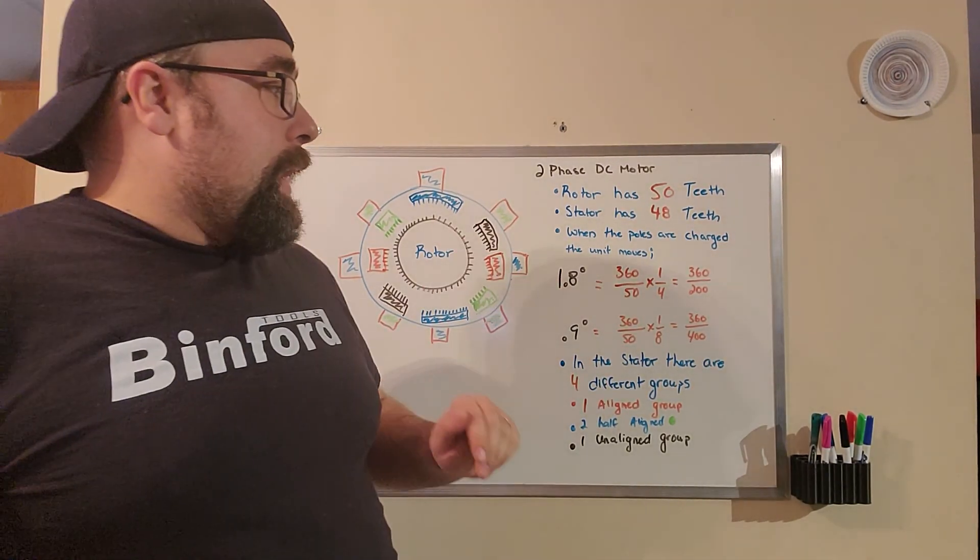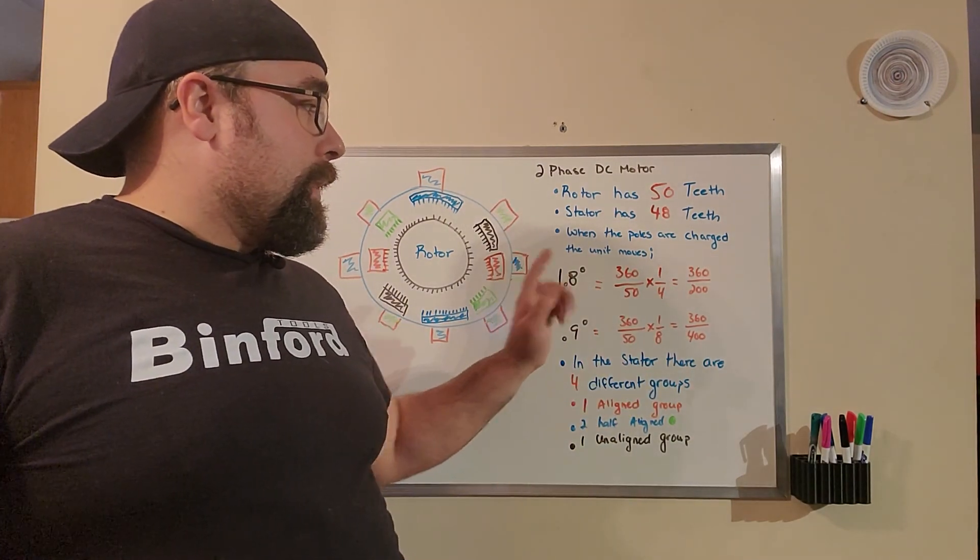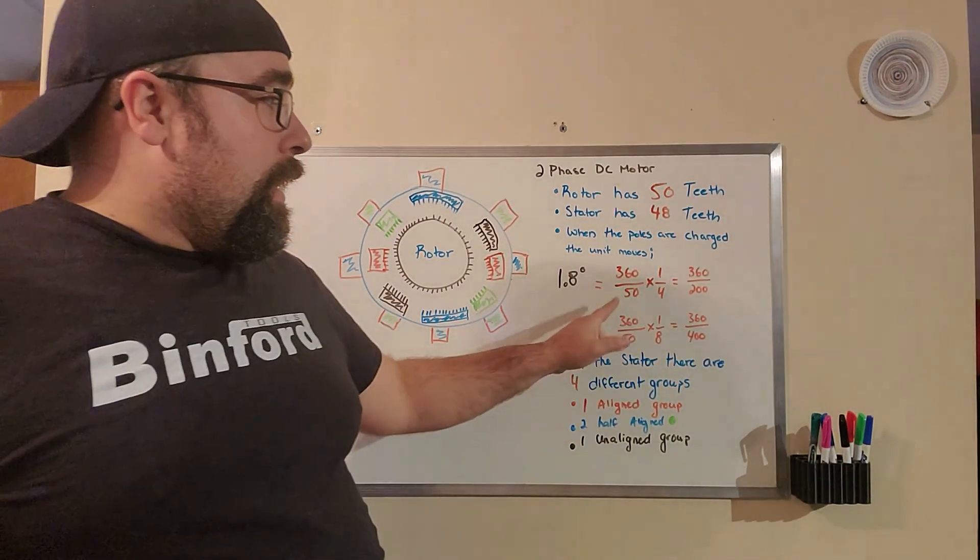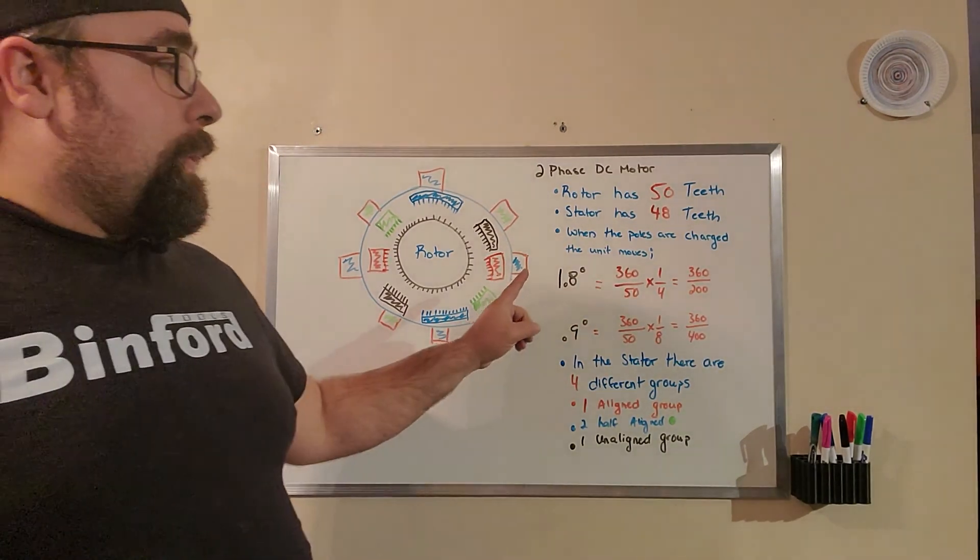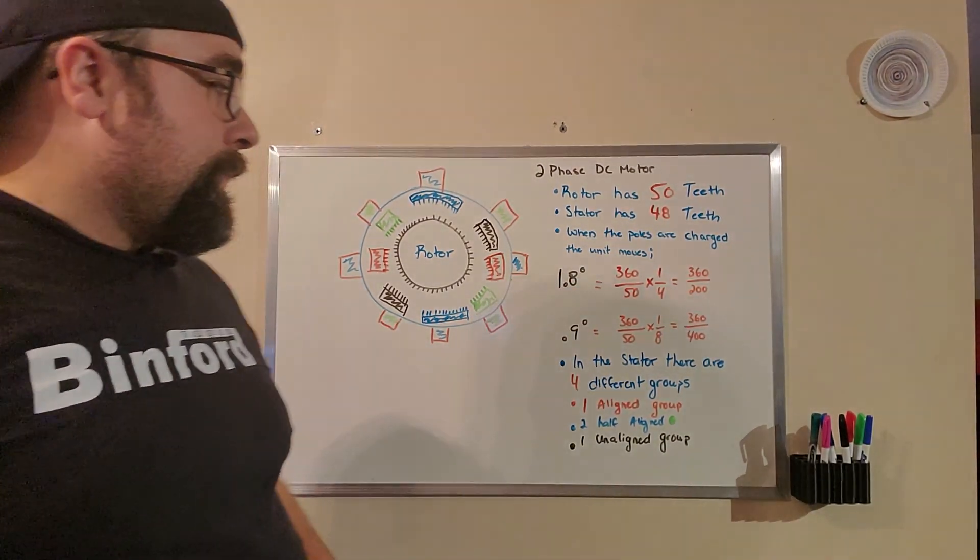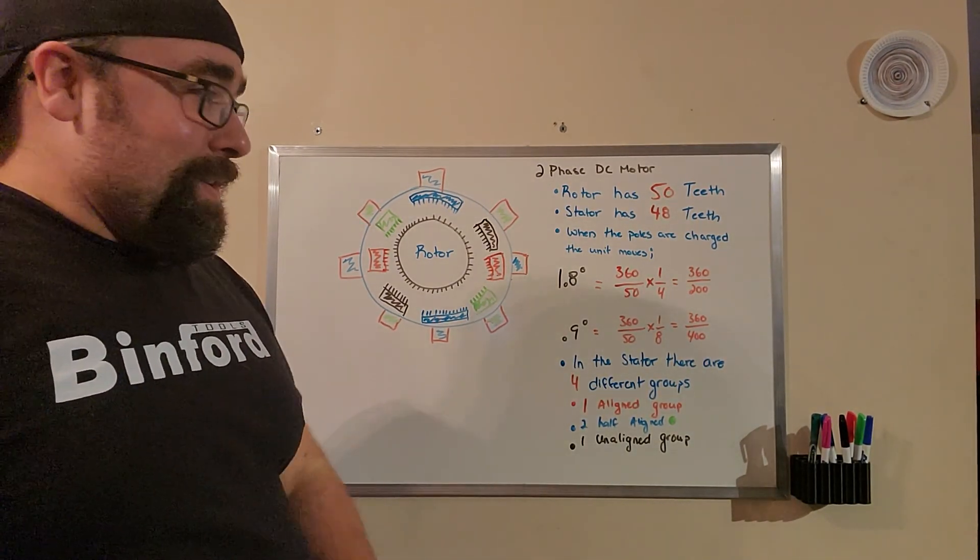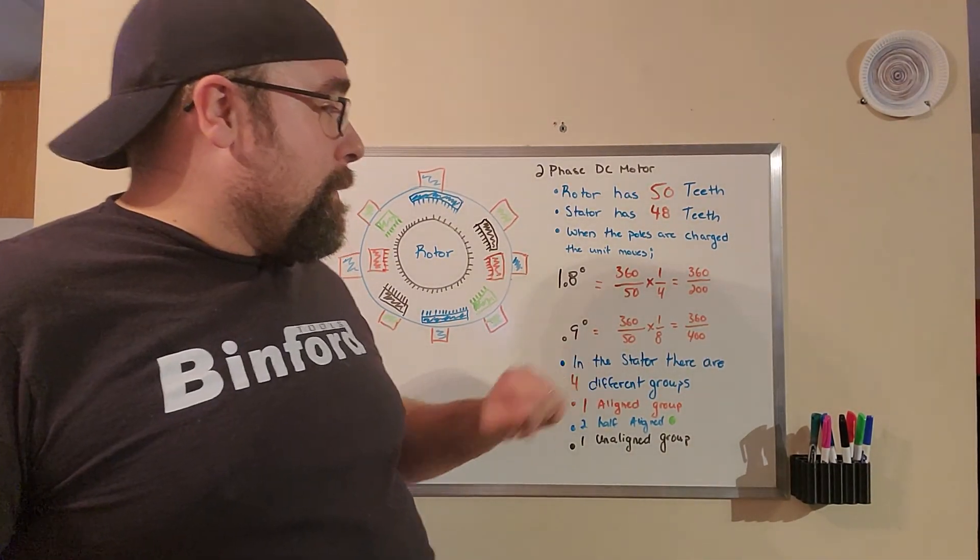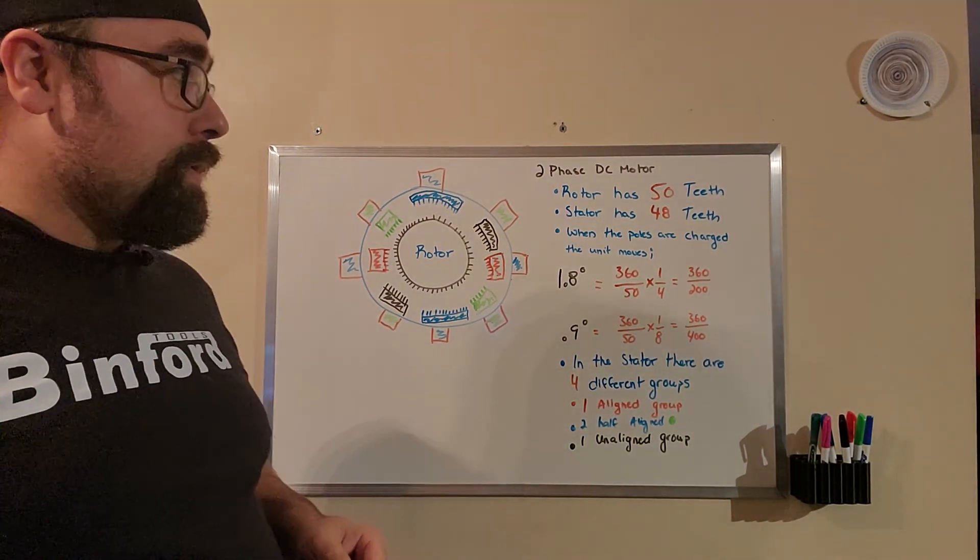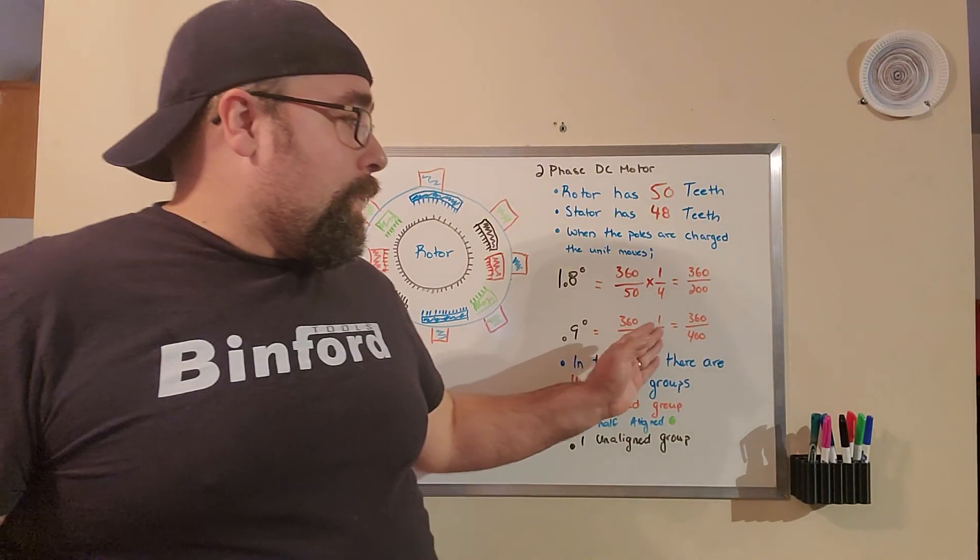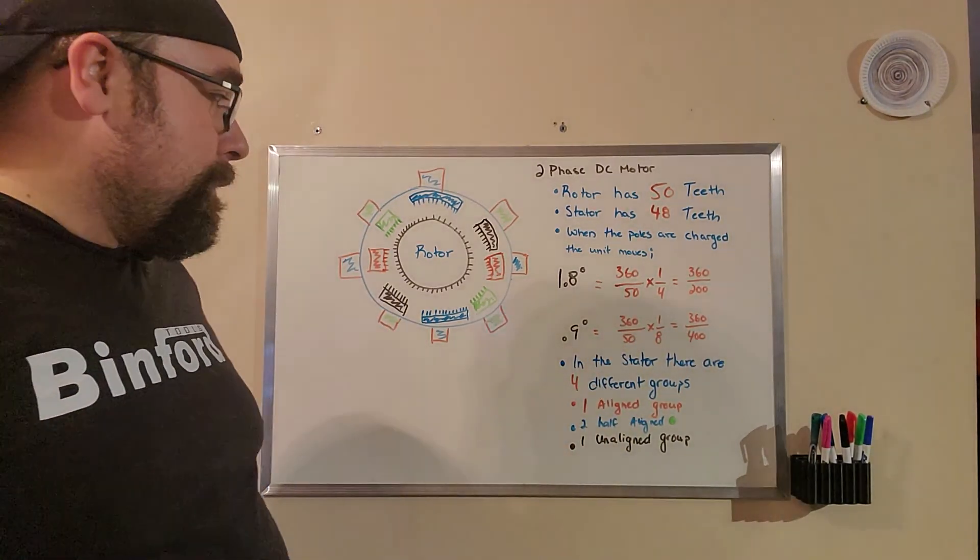Because of that, we are able to do some simple mathematics and find out that with the four different variations on 50 teeth over 360 degrees, we have 1.8 degrees of motion. Or for our 0.9 degree friends, those are nice motors, you have the same 50 teeth but you have eight possible positions due to the additional groups on the stator, which allows you to get 360 over 400 or 0.9 degrees of movement.